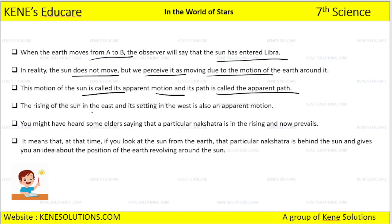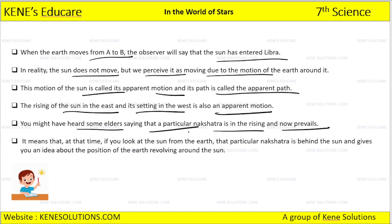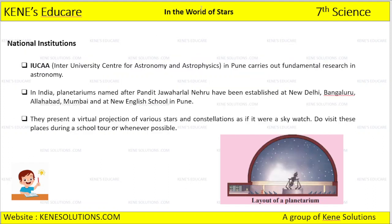The rising of the sun in the east and its setting in the west is also an apparent motion. When elders say a particular nakshatra is rising, it means that at that time, if you look at the sun from the earth, that particular nakshatra is behind the sun. The particular nakshatra behind the sun gives you an idea about the position of the earth along its orbit.